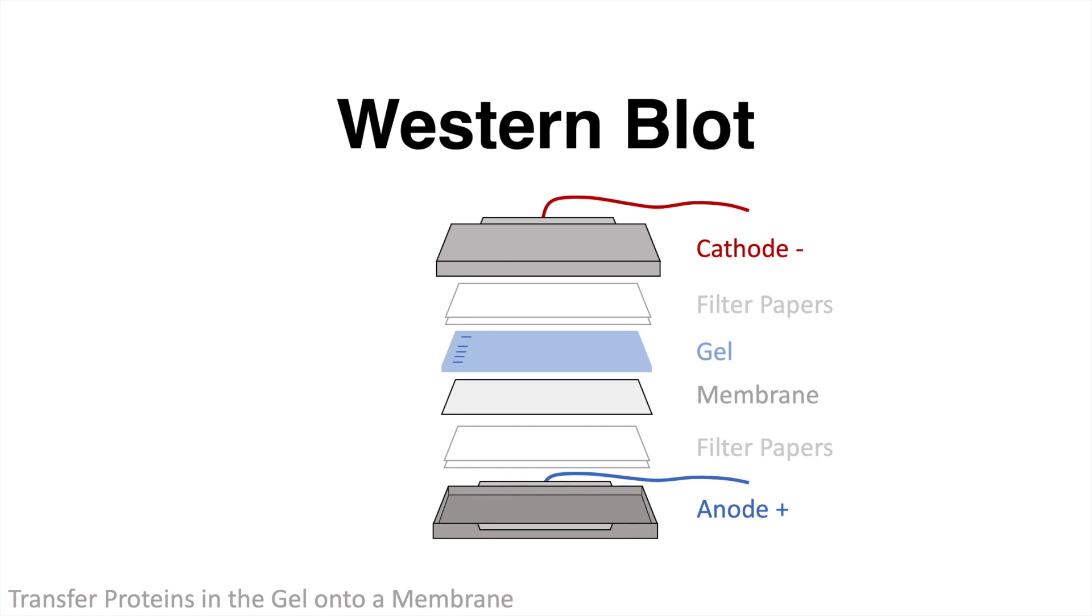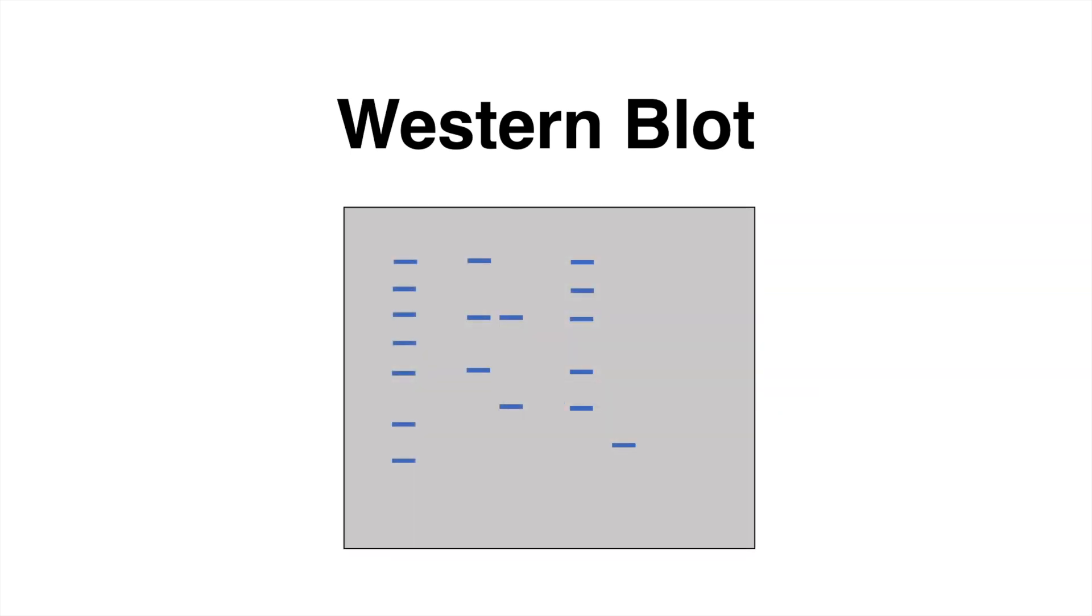The electric current pulls the negatively charged proteins, which are located in the gel, to the positively charged anode. This transfers the proteins onto the membrane. From now on, the membrane has to be incubated several times.